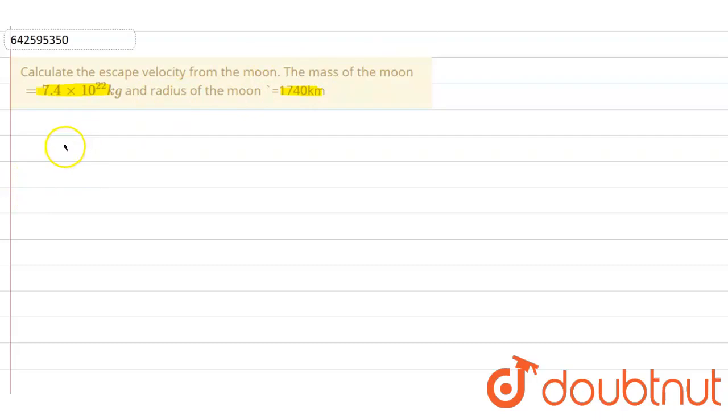Now we know that the formula for escape velocity is v = √(2Gm/R). So let us put in the values and find out the escape velocity.